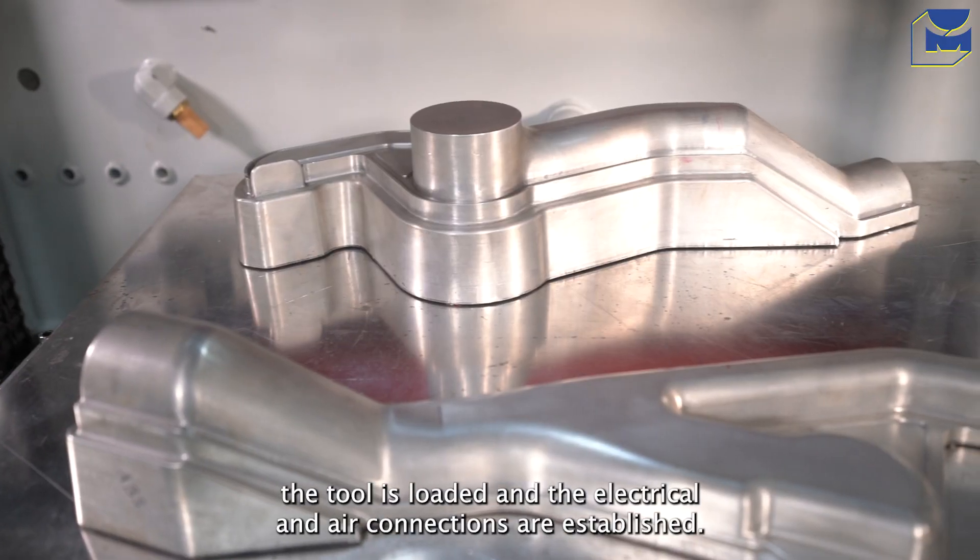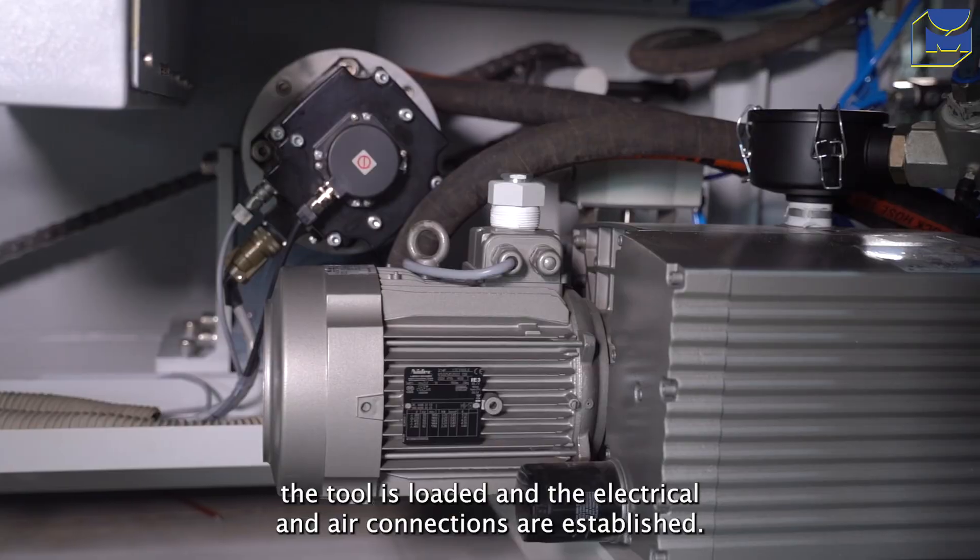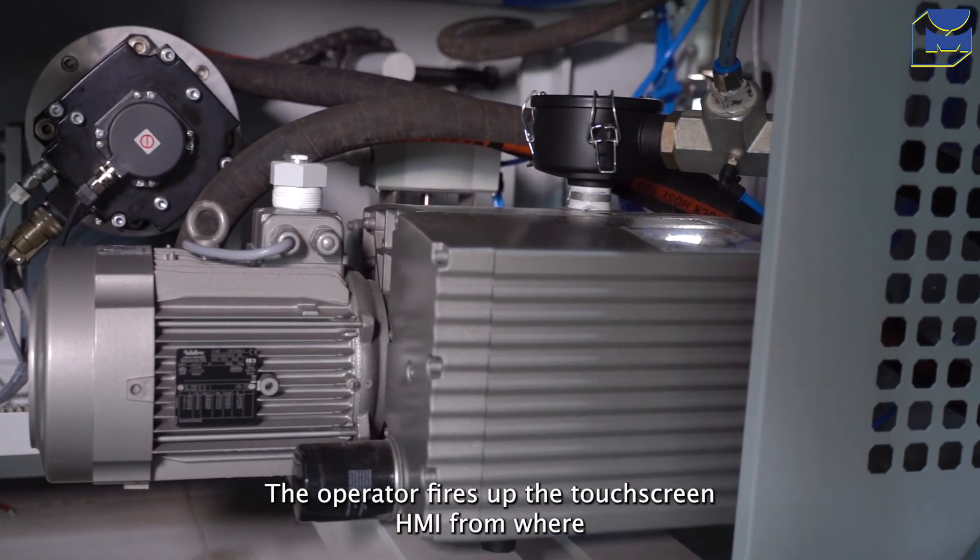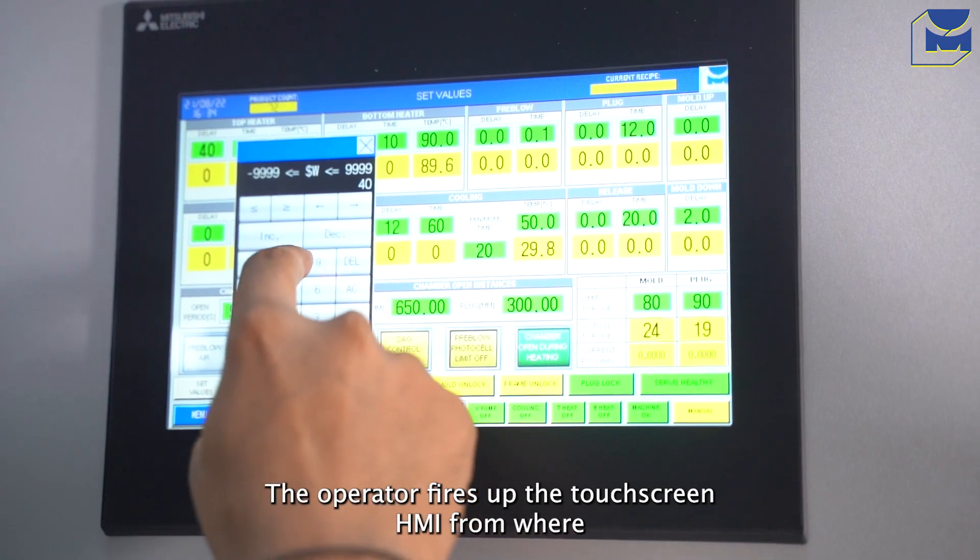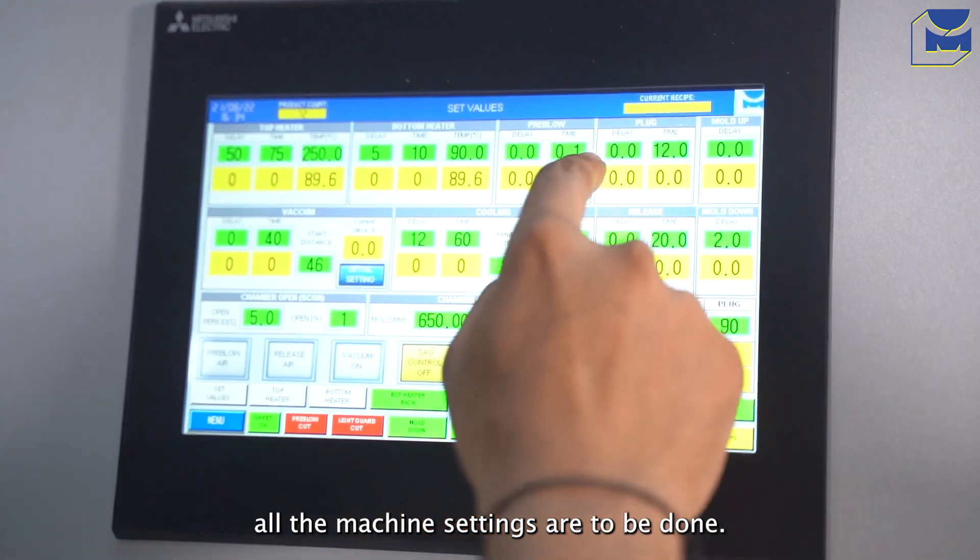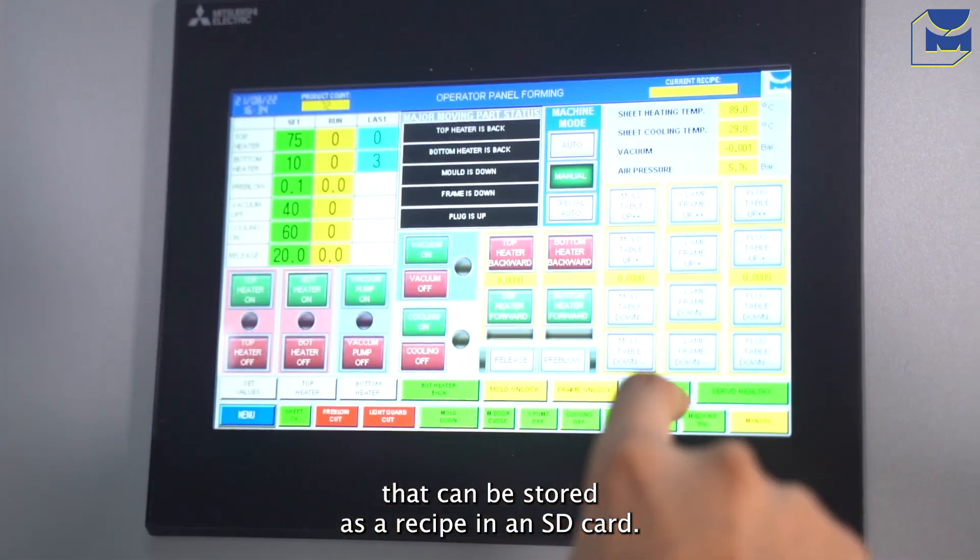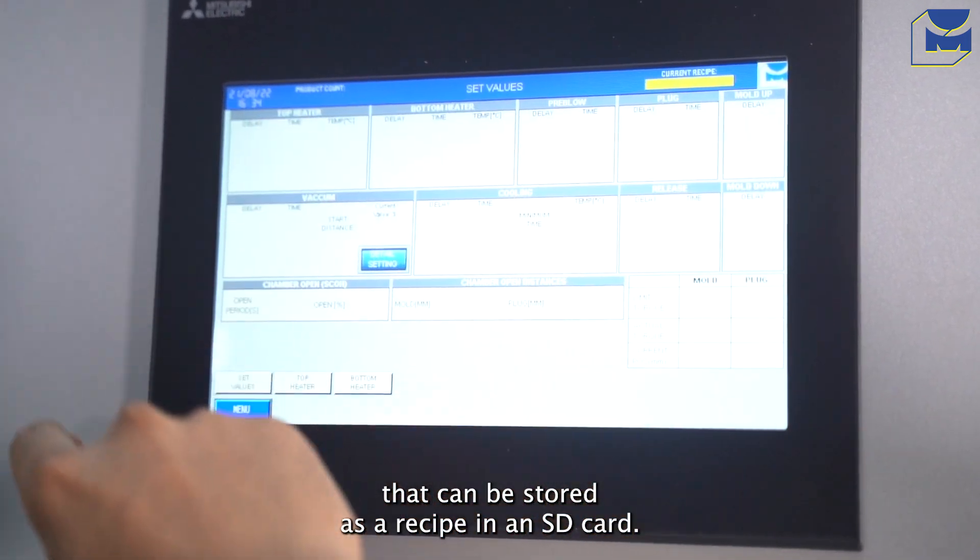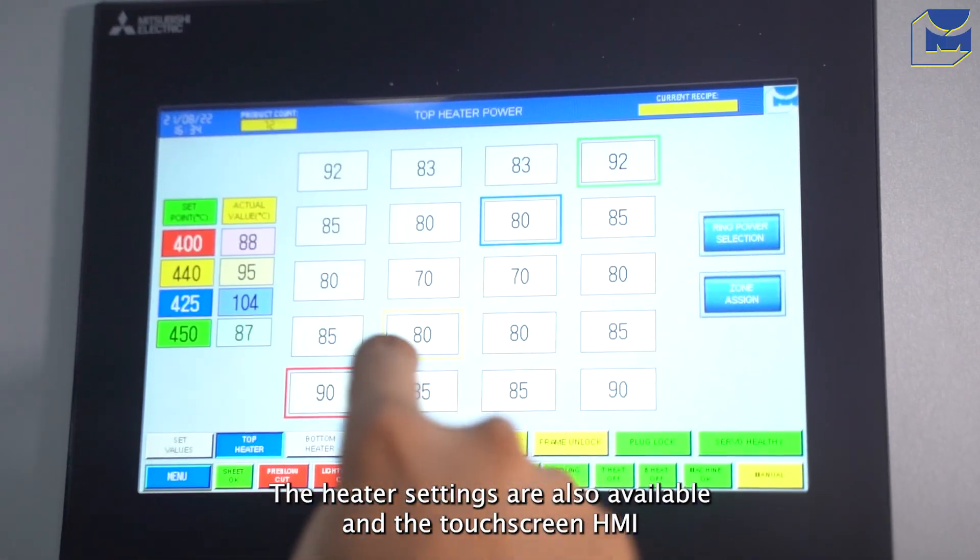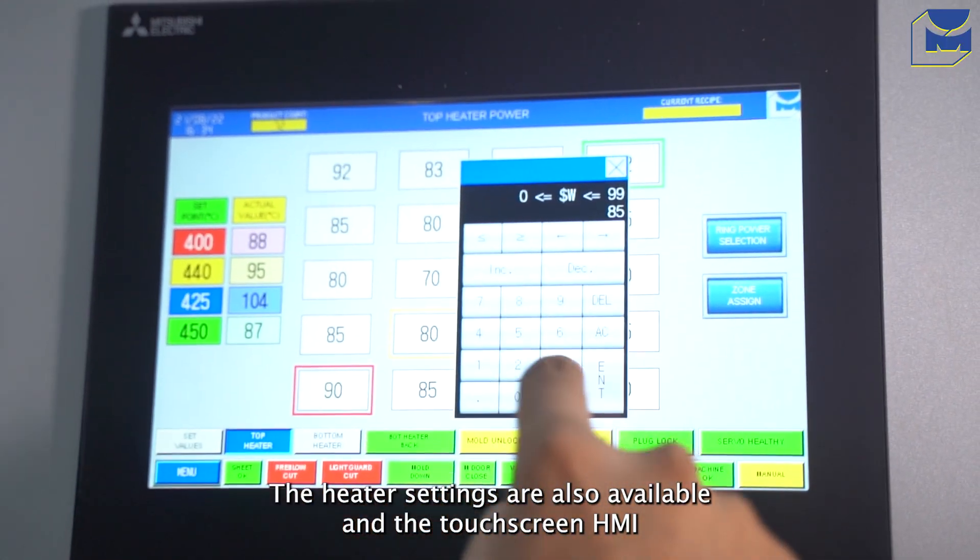Once the sheet frames are loaded, the tool is loaded, and the electrical and air connections are established, the operator fires up the touchscreen HMI from where all the machine settings are to be done. The main screen has all the timing parameters that can be stored as a recipe in an SD card. The heater settings are also available in the touchscreen HMI.